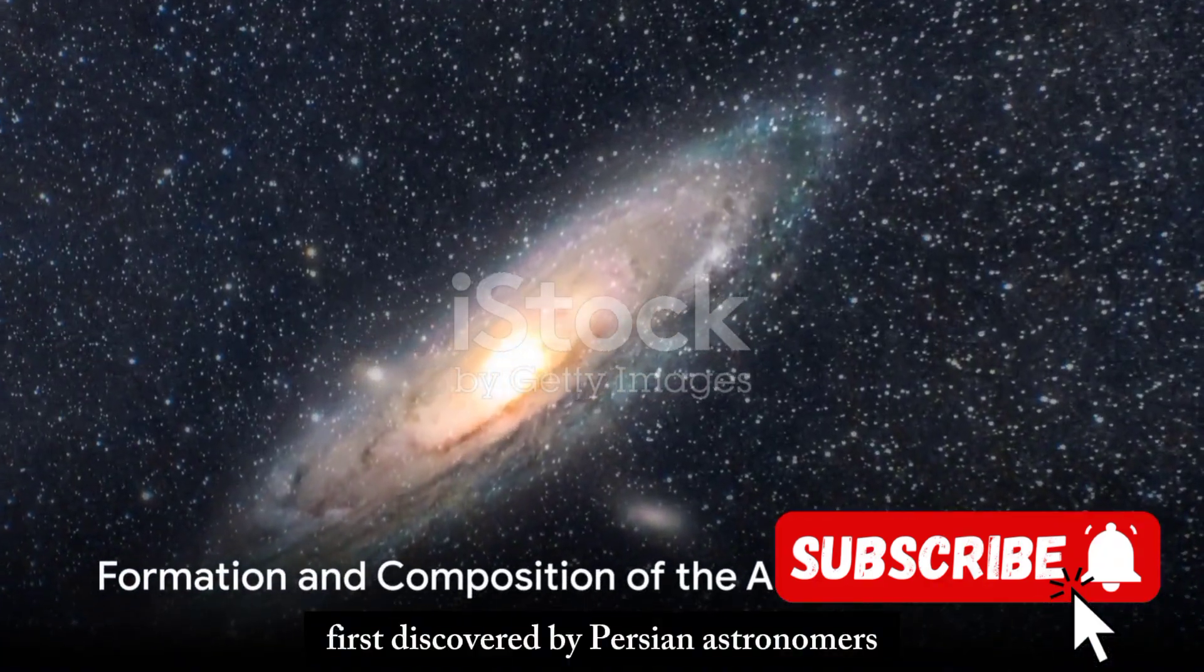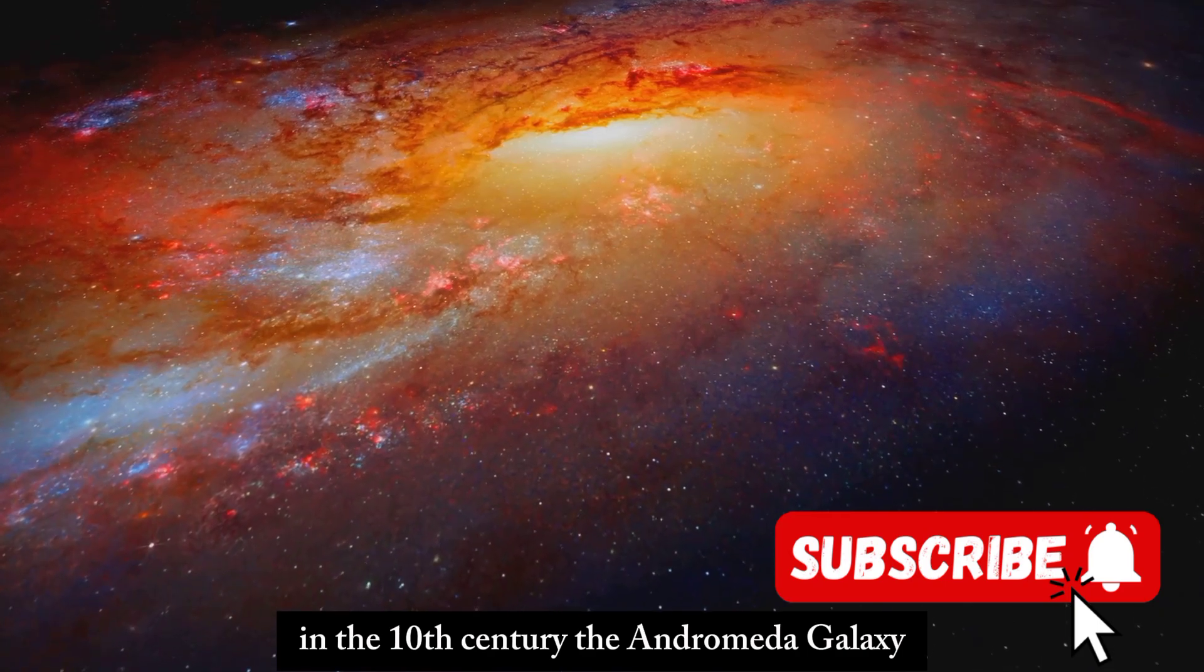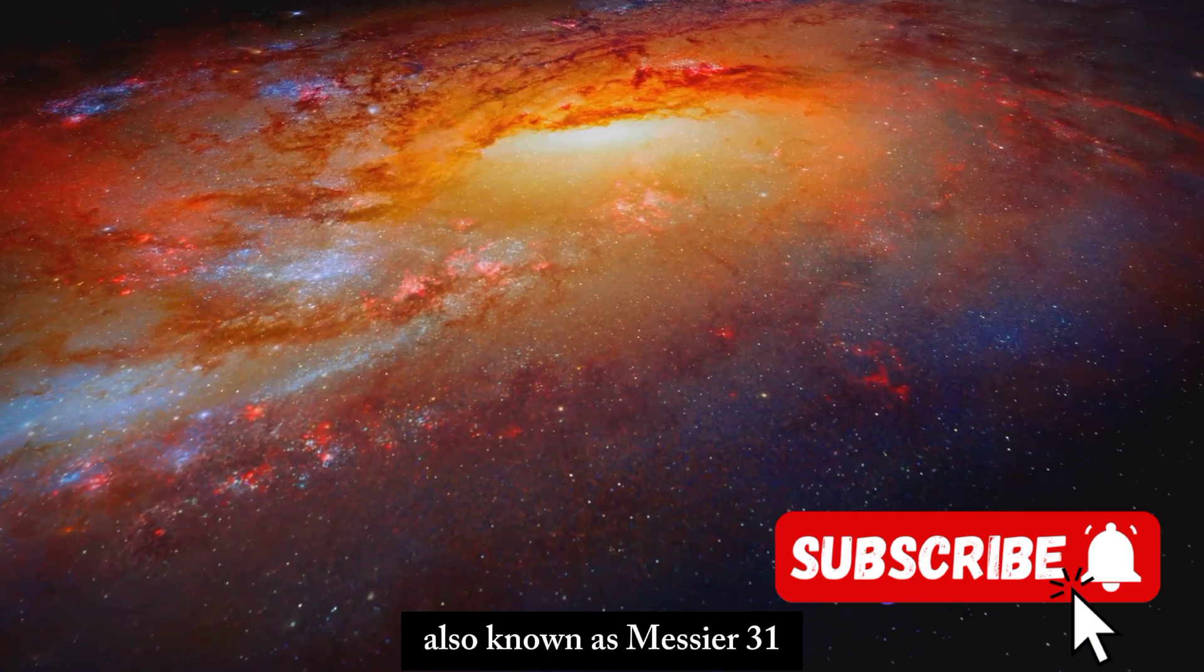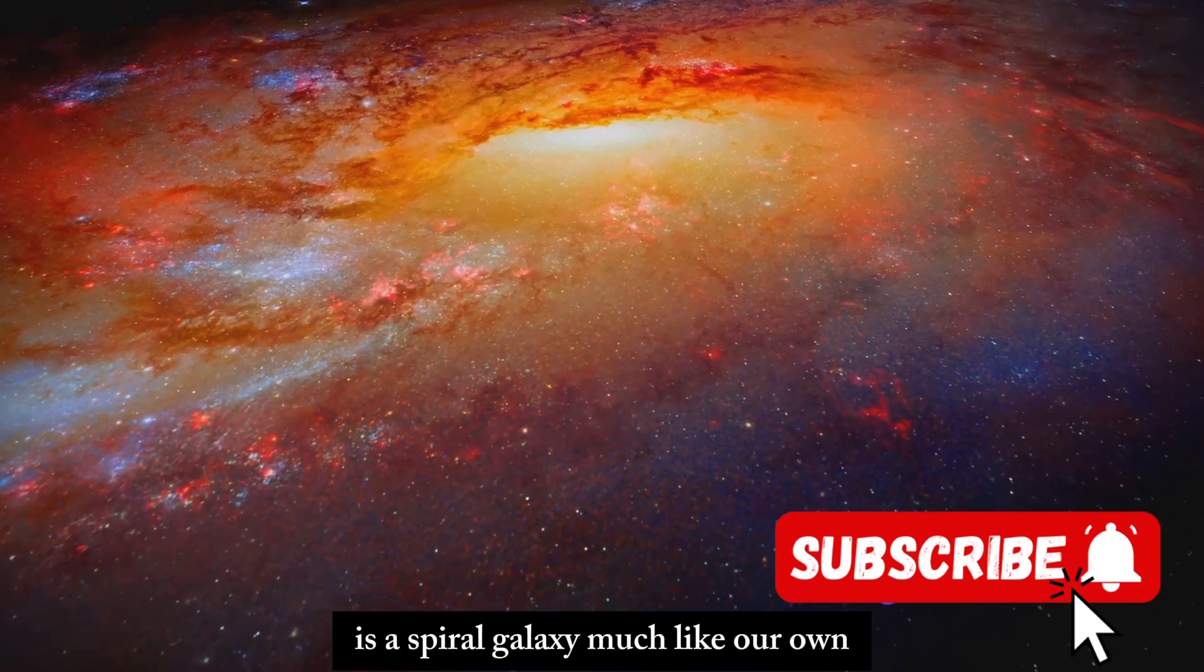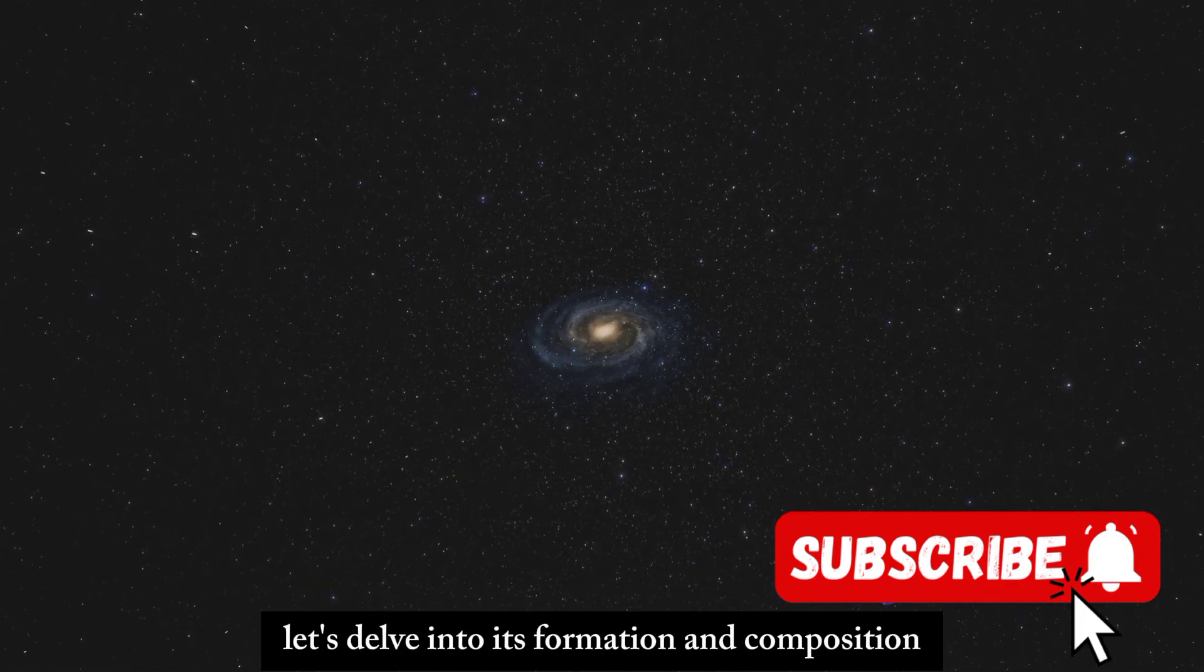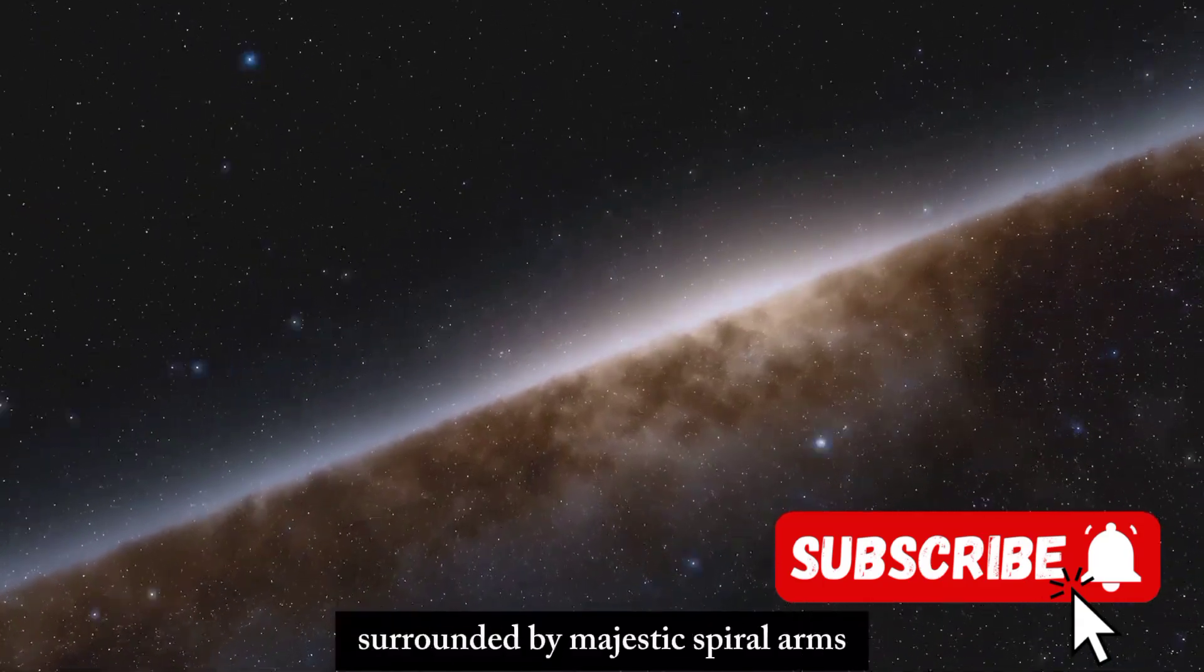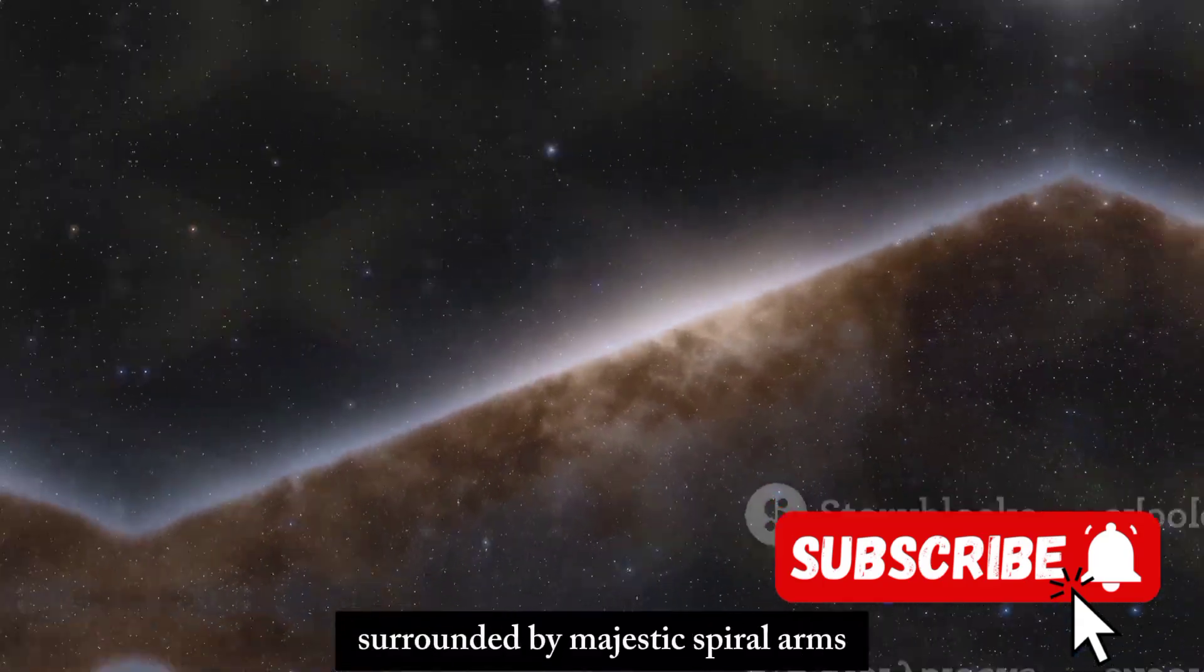First discovered by Persian astronomers in the 10th century, the Andromeda Galaxy, also known as Messier 31, is a spiral galaxy much like our own. Let's delve into its formation and composition. The galaxy is home to billions of stars, including a central bulge surrounded by majestic spiral arms.